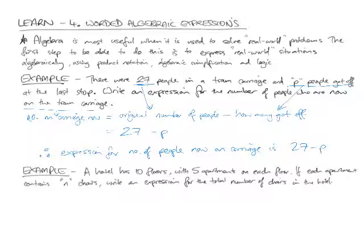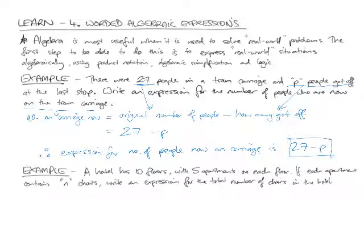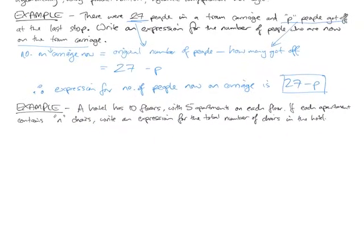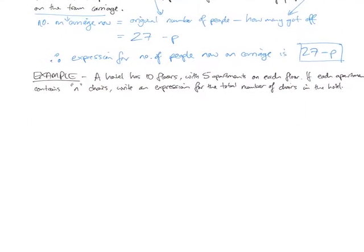If we had a more complicated problem or more information, we'd be able to do more maths on that, but the starting point is to be able to express how many people are on the carriage right now: 29 less how many people got off at the last stop.